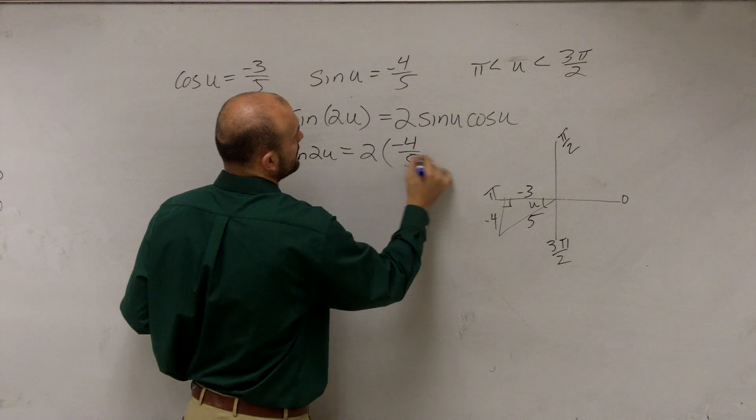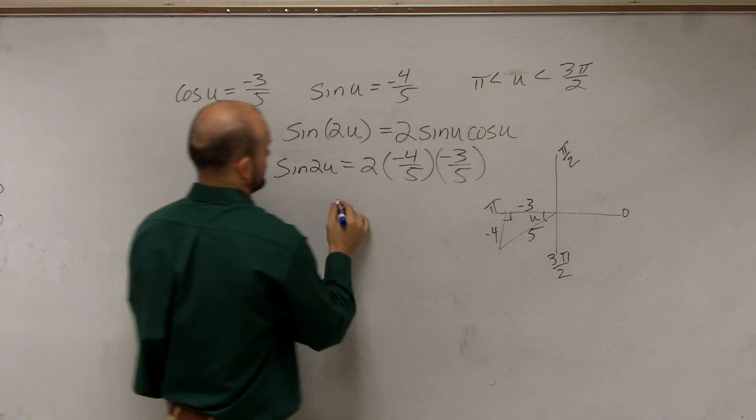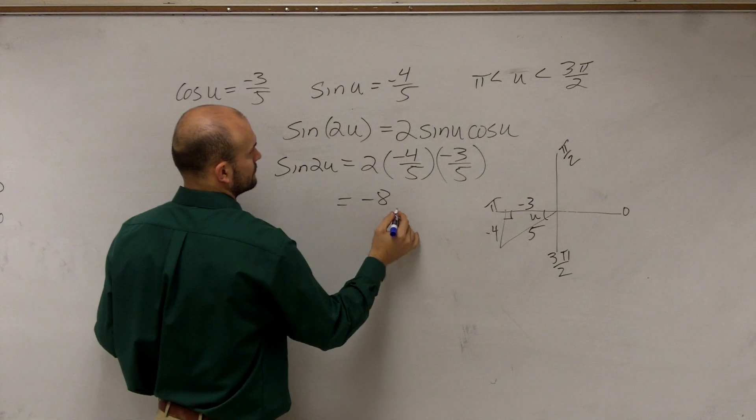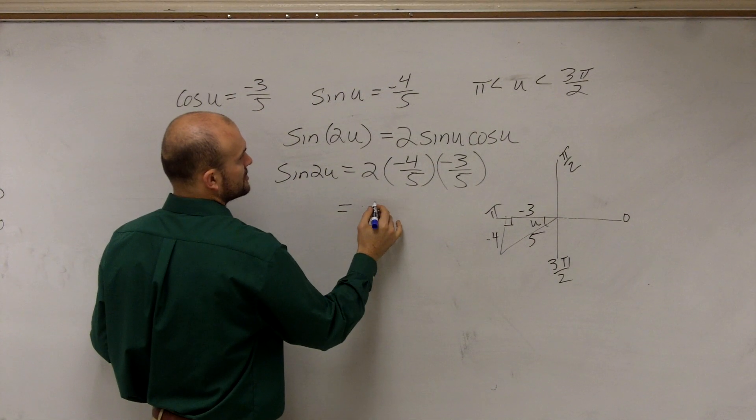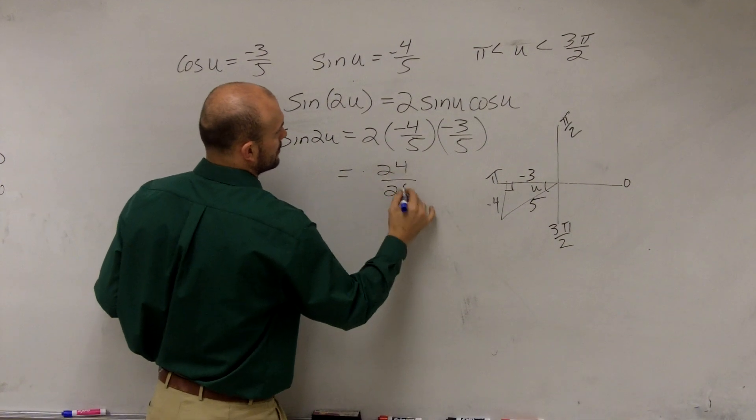Sine of u, which is negative 4 over 5. Cosine of u, negative 3 over 5. That's going to be 312, so it's going to be positive 24 over 25.